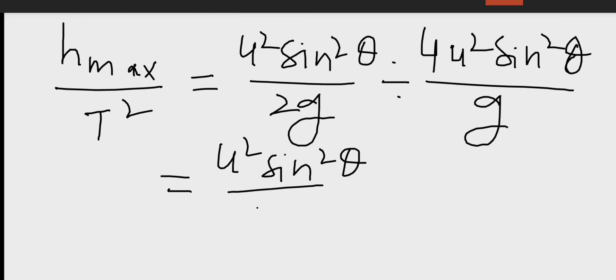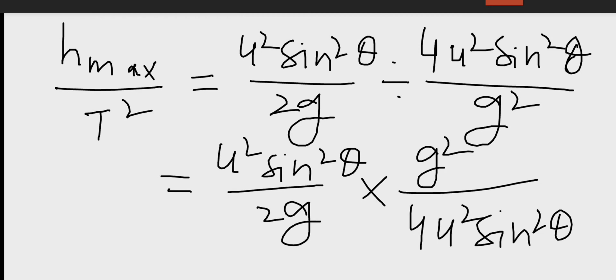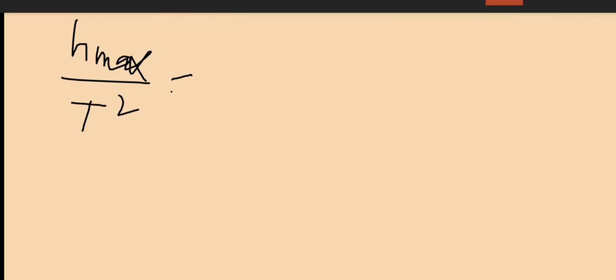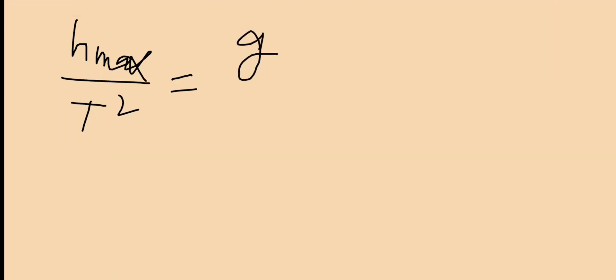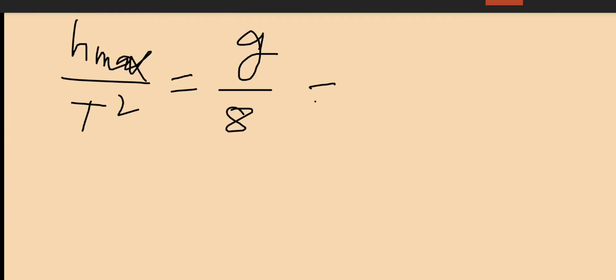We write u squared sine squared theta upon 2g, and when we convert the division into multiplication, it becomes G squared upon 4u squared sine squared theta. The u squared cancels with u squared, sine squared theta cancels, and G partially cancels, giving the ratio of maximum height to square of time of flight equal to G upon 8.